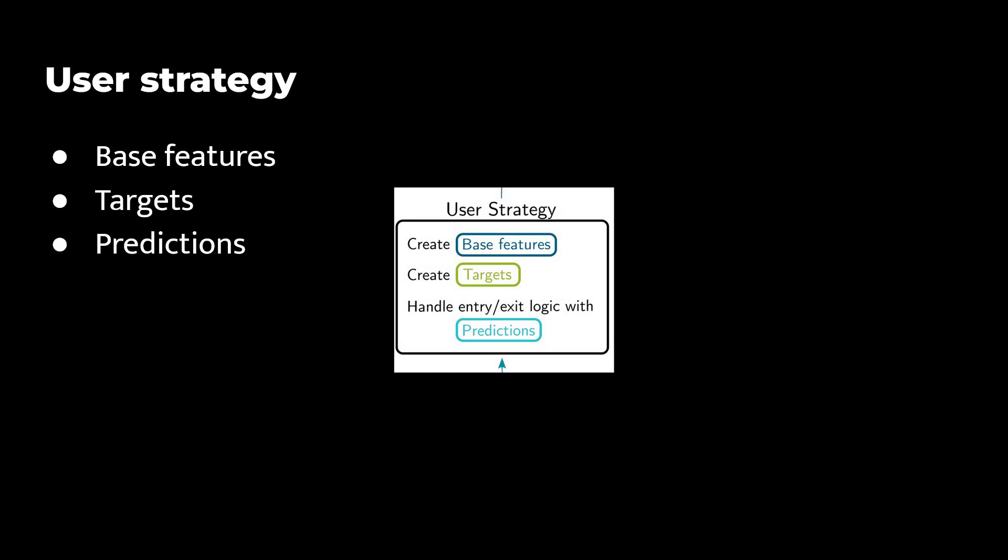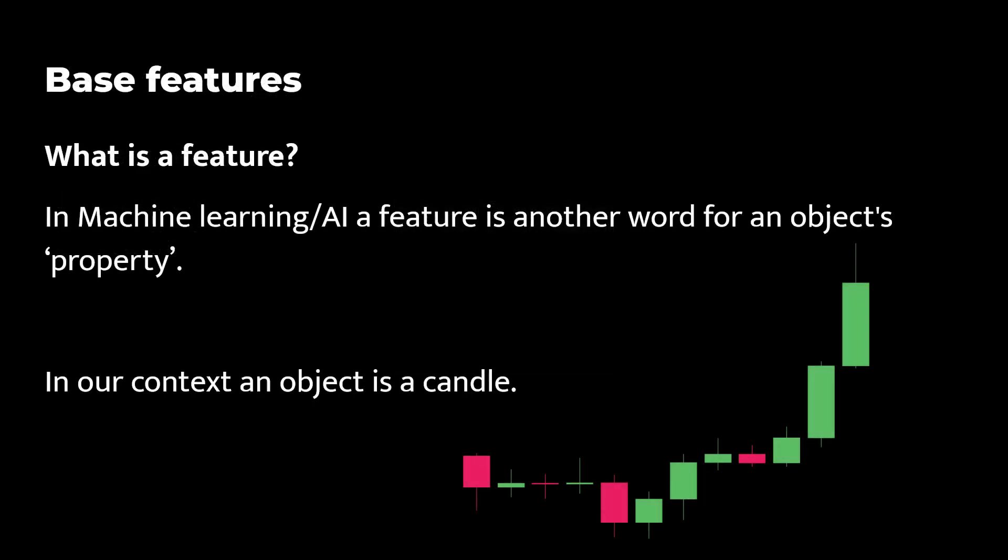So let's start right away with the first step, which is the user strategy section. And we already come across terms that need some explanation, namely base features, targets and predictions. Let me explain first what these things are. The best way I can explain what a feature is, is to describe it as the AI and machine learning term for a property or a variable of an item. If I take the example of a trading candle here, then this is the object.